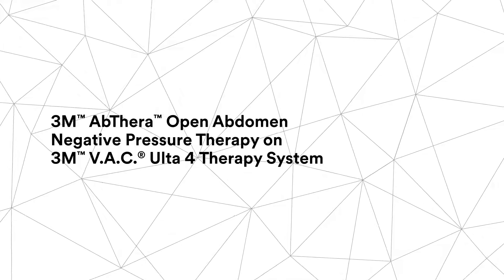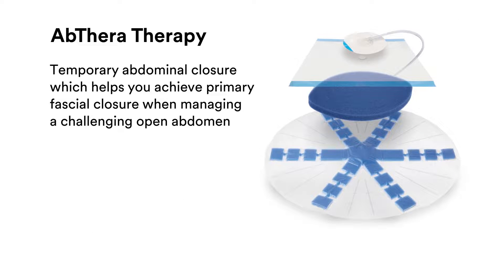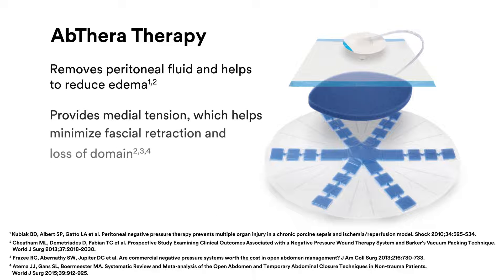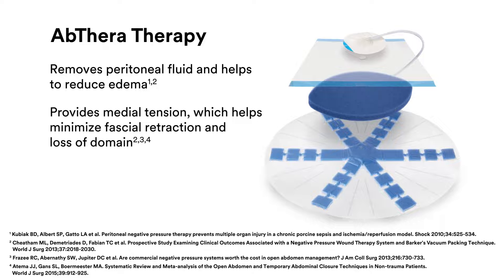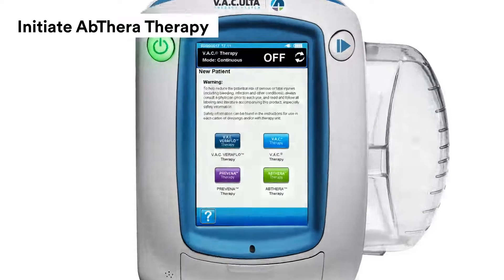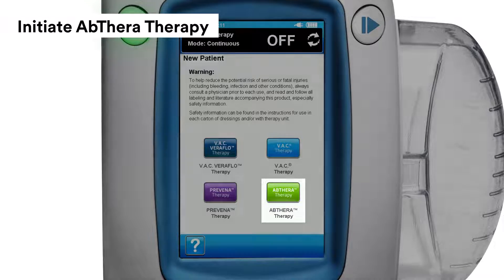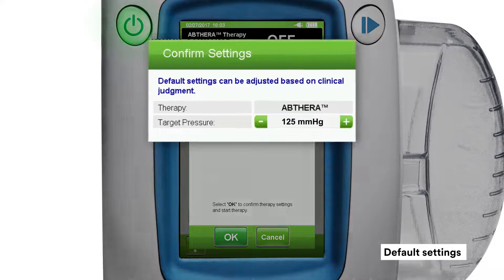3M AbThera open abdomen negative pressure therapy provides temporary abdominal closure, which helps you achieve primary fascial closure when managing a challenging open abdomen. AbThera therapy is designed to manage the open abdomen by removing peritoneal fluid and helping to reduce edema, providing medial tension which helps minimize fascial retraction and loss of domain. To initiate AbThera therapy, press the green AbThera therapy button. The confirm settings screen gives you an option for target pressure of 100 to 150 millimeters of mercury, which you can adjust using the plus and minus signs.